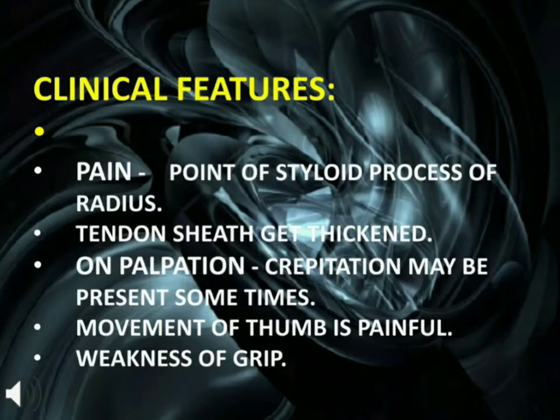Clinical Features: Pain at the point of the styloid process of the radius. The tendon sheath gets thickened. On palpation, crepitation may be present at some times. Movement of the thumb is painful and there is weakness of grip.